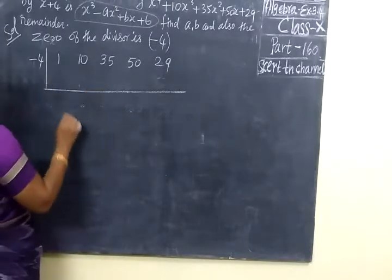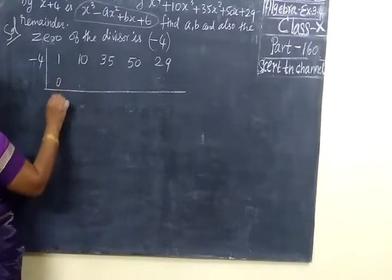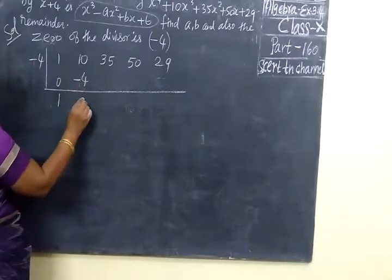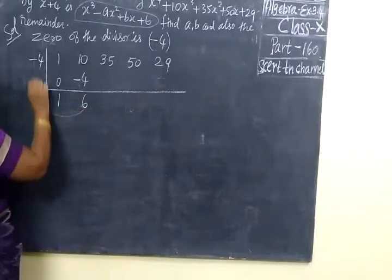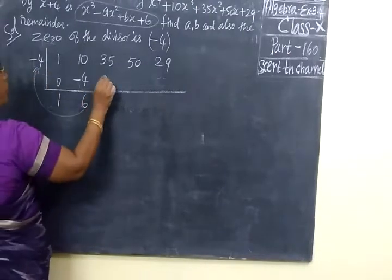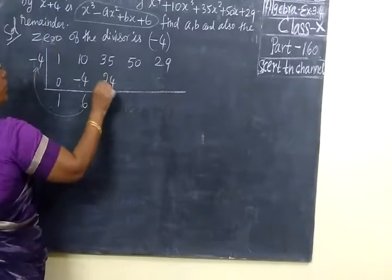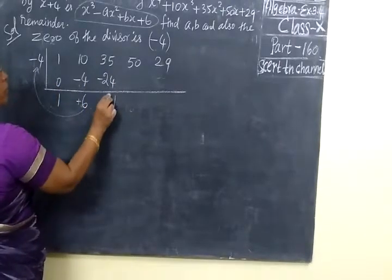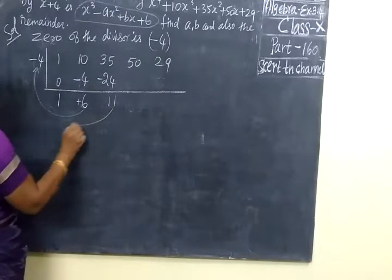Now as usual I have written, starting 0, 1, 1 into 4 is 4, minus. Now 6 into 4, 6 fours are 24, minus 24. Plus into minus is minus. So 5 minus 4 is 1, 3 minus 2 is 1, giving us 11.